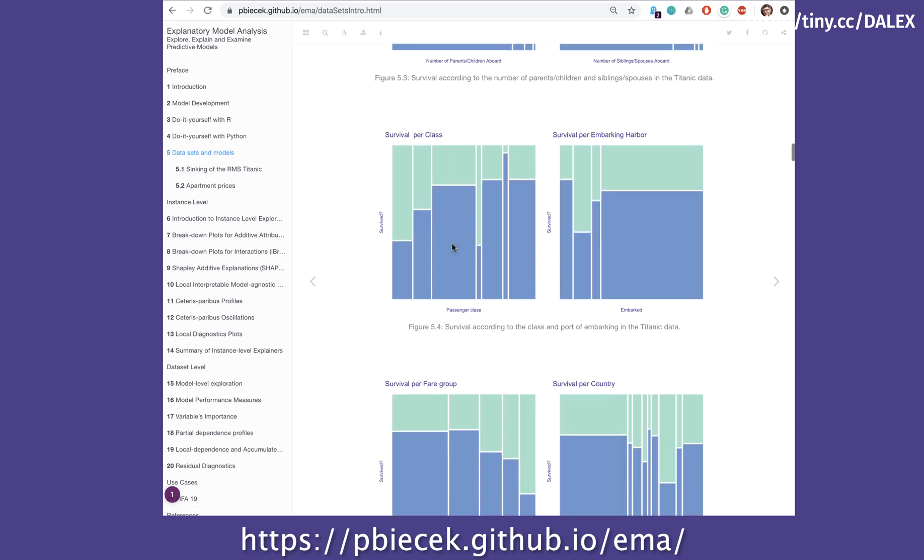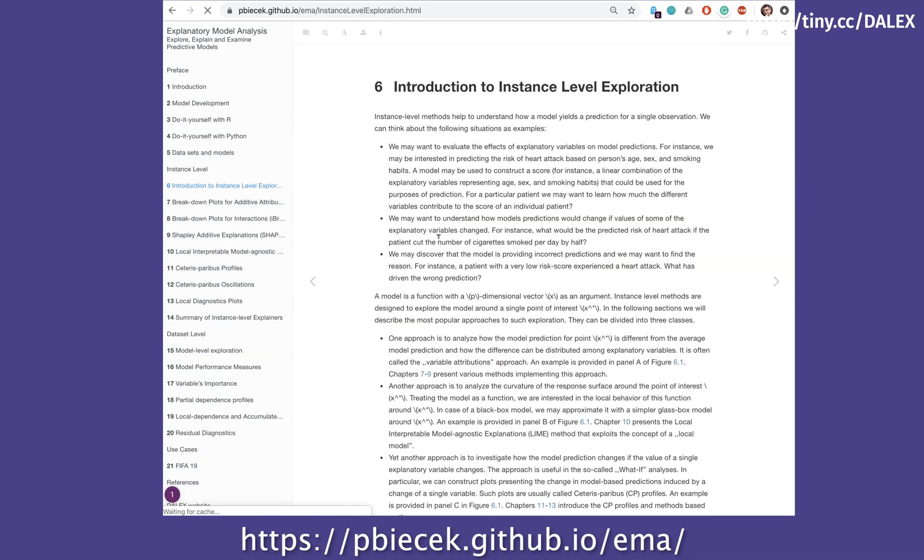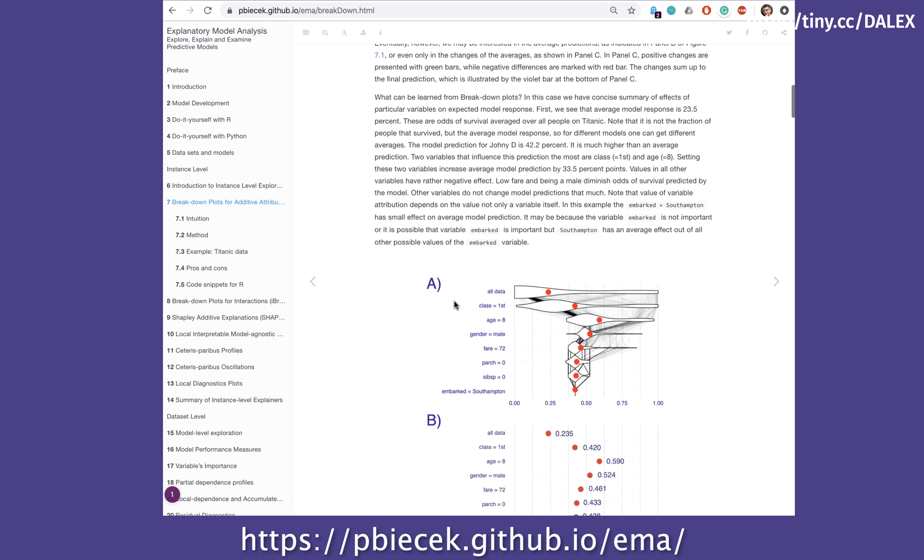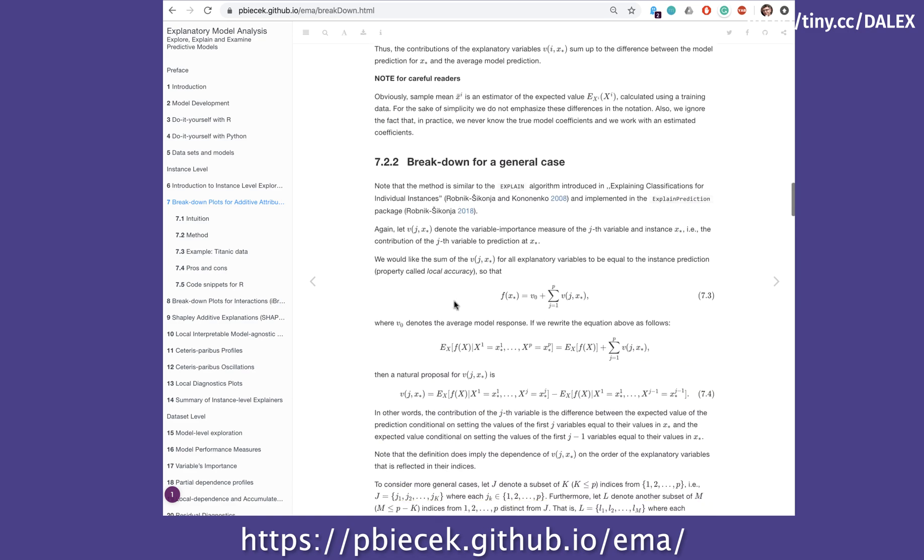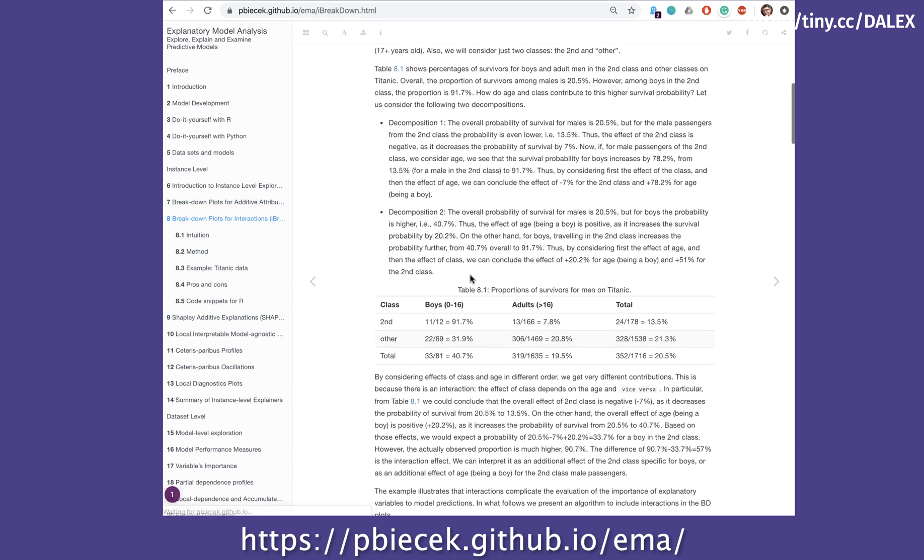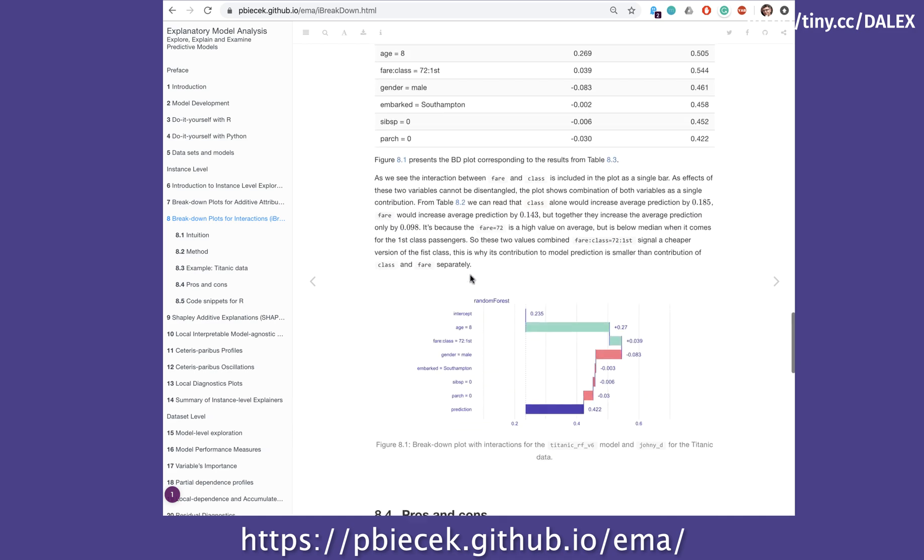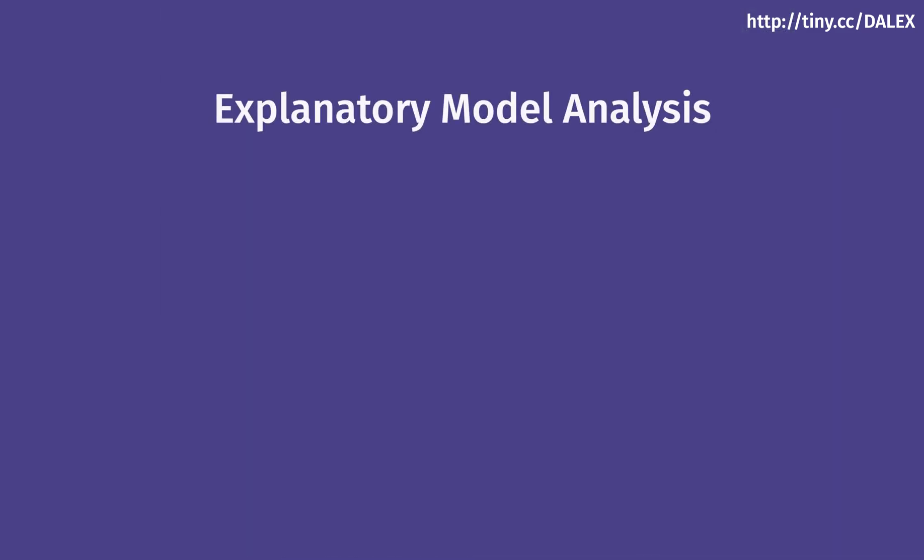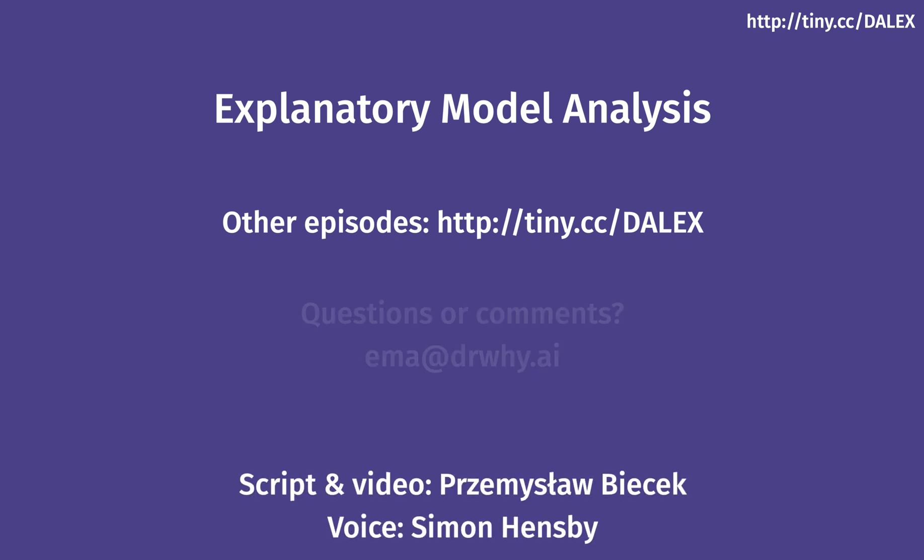The consecutive episodes in this podcast show how to perform EMA analysis using the Dalek library for R or Python. Subsequent episodes are divided into two tracks, one with examples for the R program and the second for Python. The list of all episodes is available on the website tiny.cc/Dalek. If you have any question or comment related to this topic, please let me know.